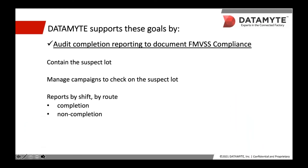Audit completion reporting is one of Datamite's strengths. The main purpose of this reporting is to document Federal Motor Vehicle Safety Standard compliance. Essentially, we help you quickly identify the suspect loss and find the clean point. Datamite has the tools to help you manage campaigns to check out the suspect loss and create at-a-glance reporting to show what the defects were, when they were happening, on which shift, and if the audits were completed as required.